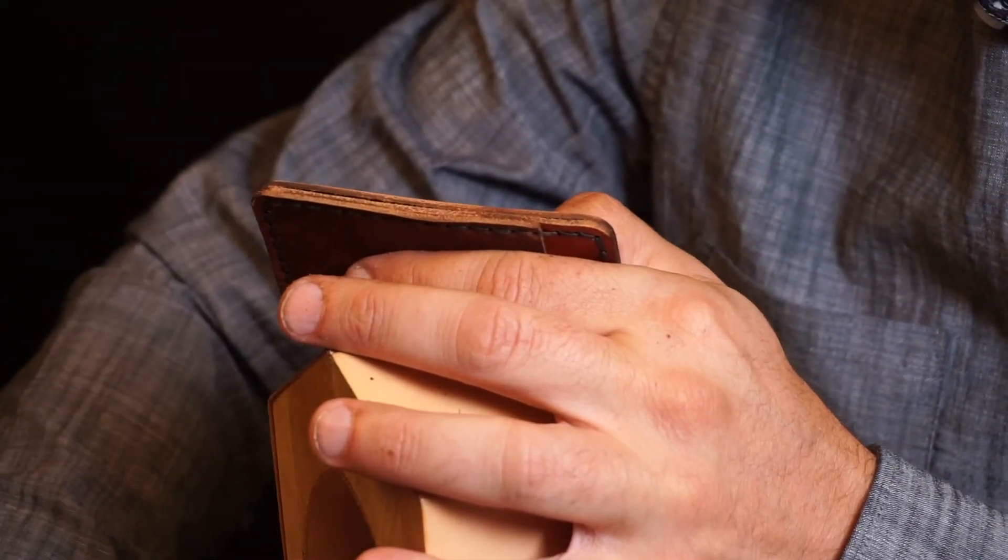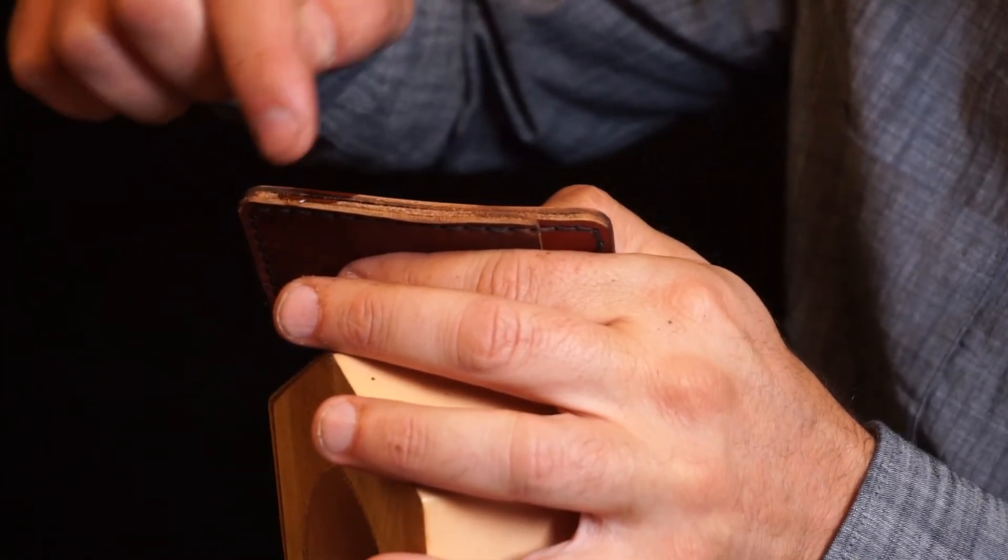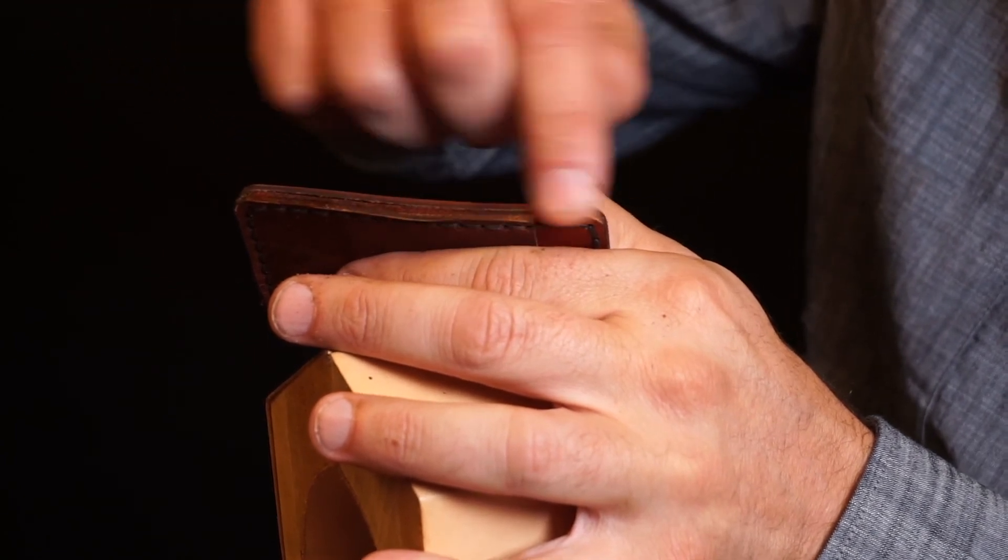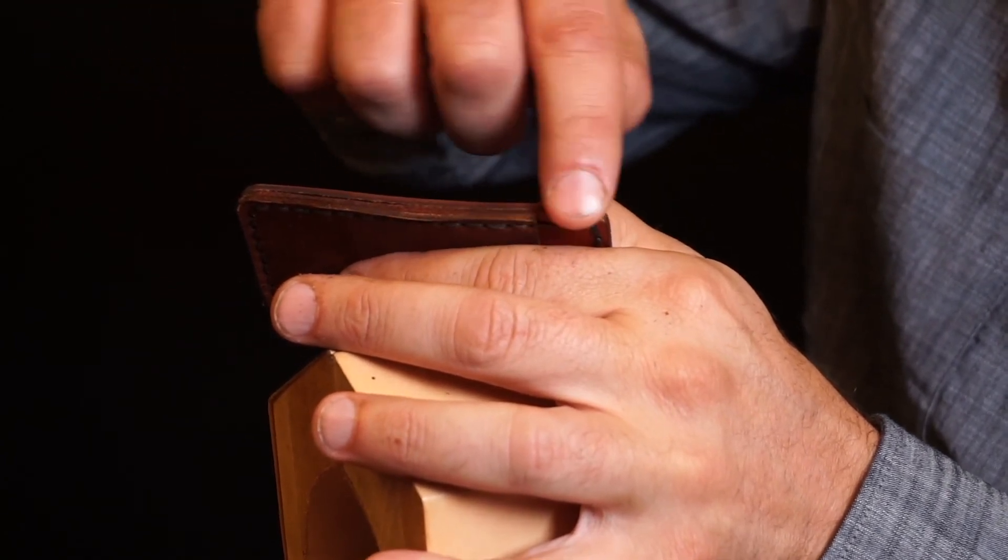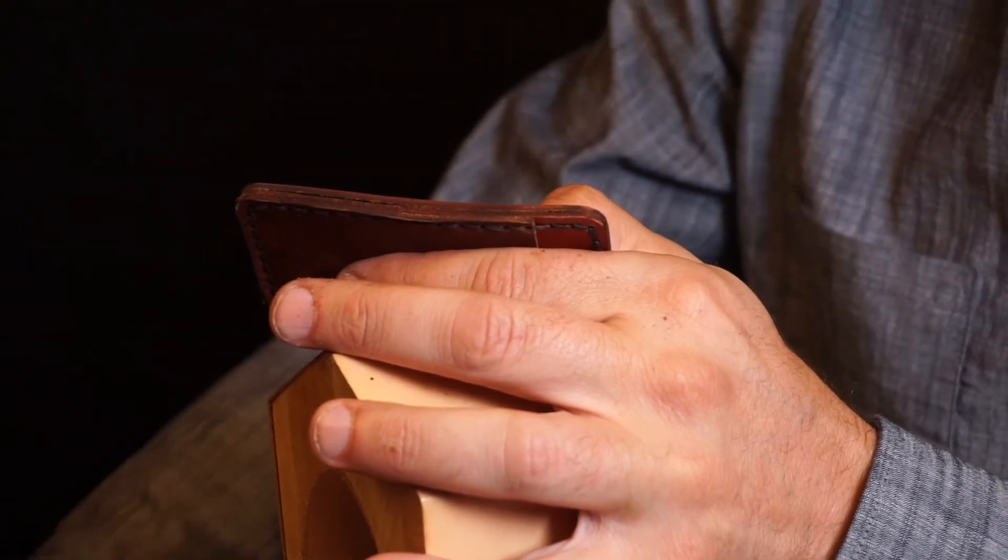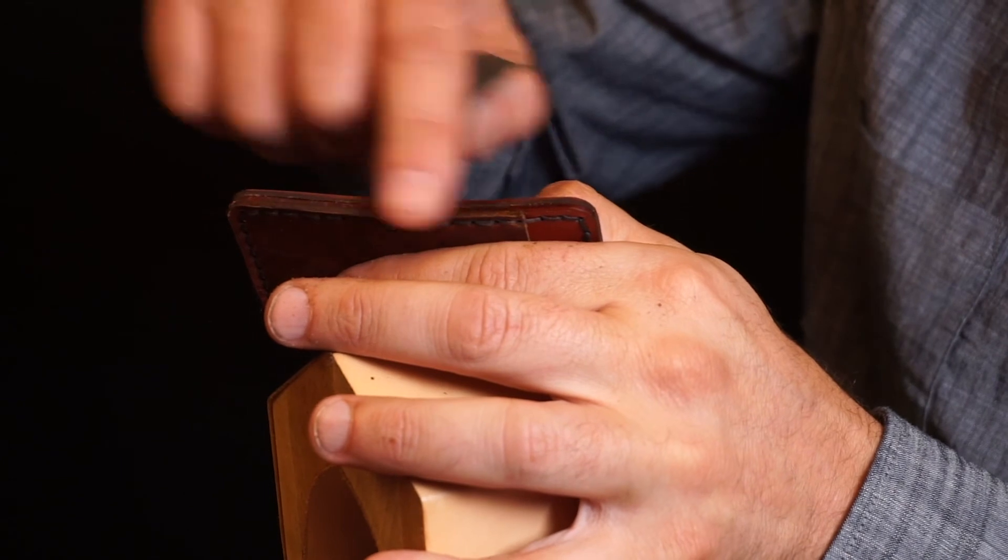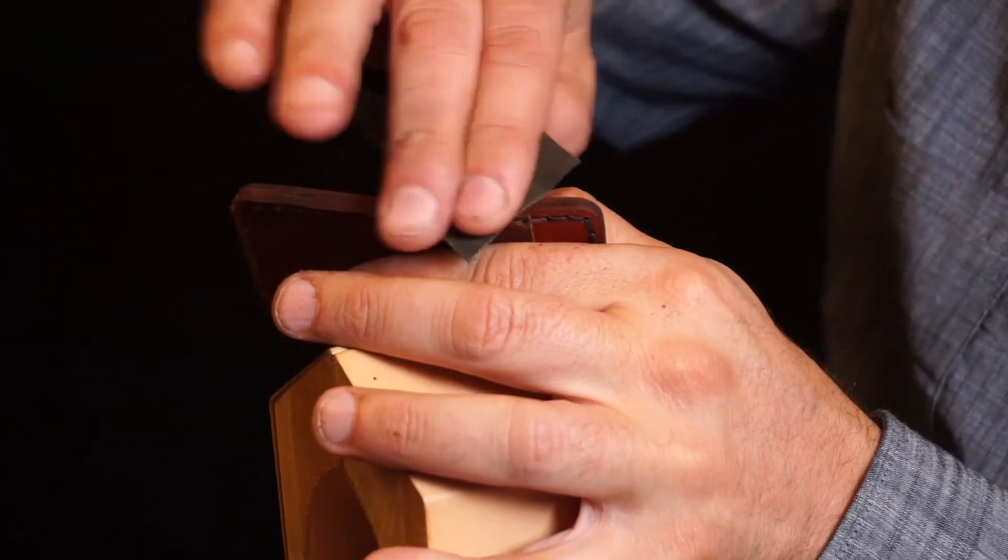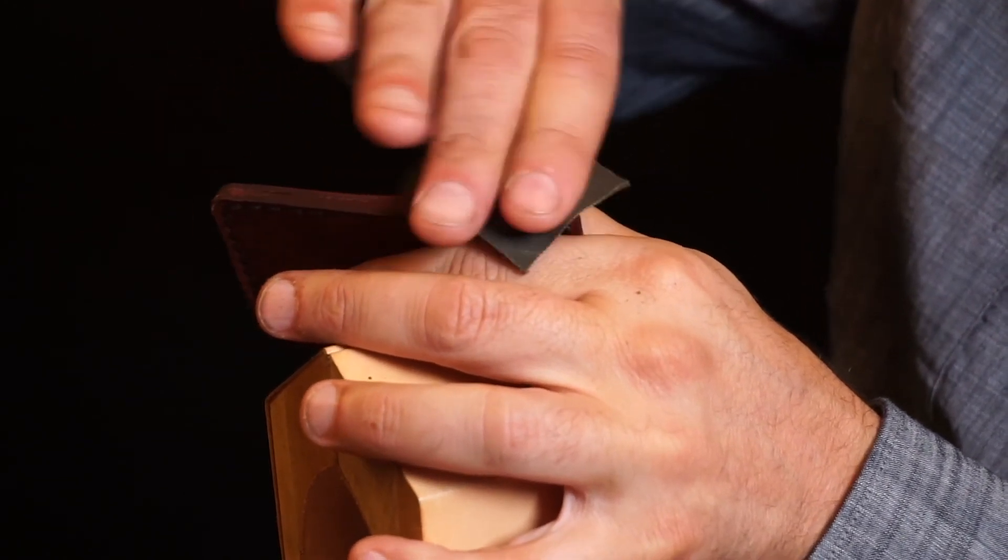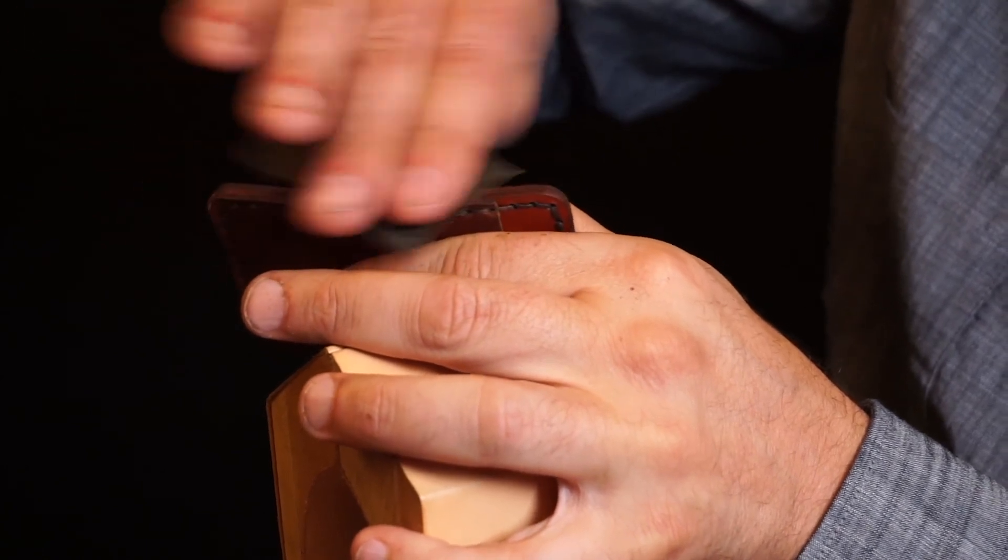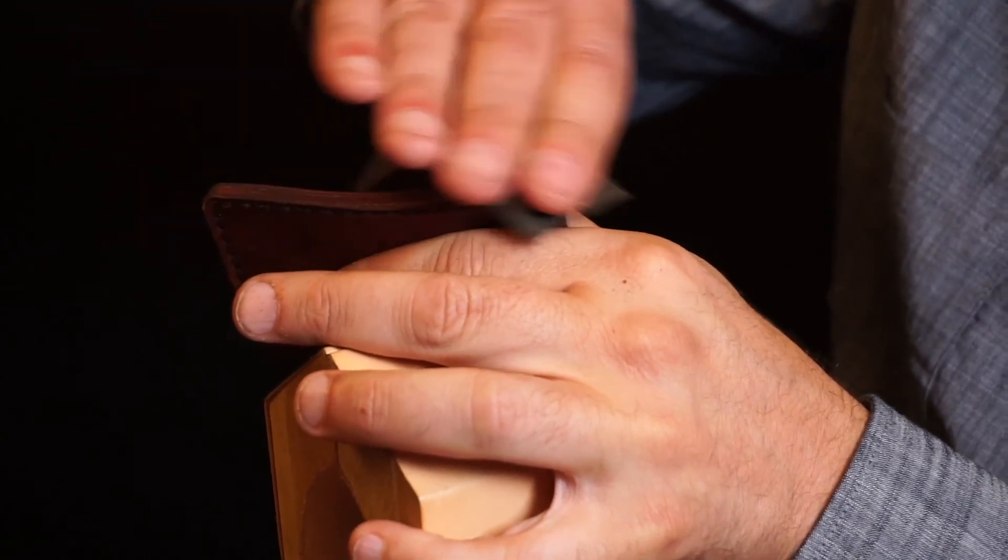When you're happy with your results, a little dab of water just to wet those edges. And then we're going to burnish with the wax canvas to give a nice shiny smooth edge. Now you can spend as much time on your edges as you'd like to get the edge that you prefer.